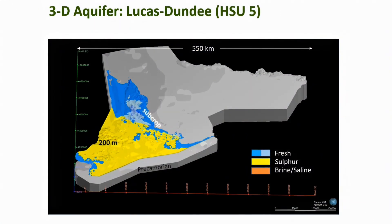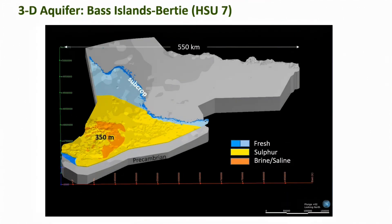The next four slides are 3D views of the four principal confined bedrock aquifers in Southern Ontario, with each slide color-coded by principal water type: orange for deep brine, yellow for brackish to saline sulfur water at intermediate depths, and blue for freshwater at shallow depths. The first slide is the Lucas-Dundee aquifer, dominated by sulfur water with freshwater in and near the subcrop belt. The next is the Bass Islands-Birdseye aquifer, where you can clearly see the down-dip gradation from shallow freshwater to intermediate sulfur water to brine in the deepest portions.